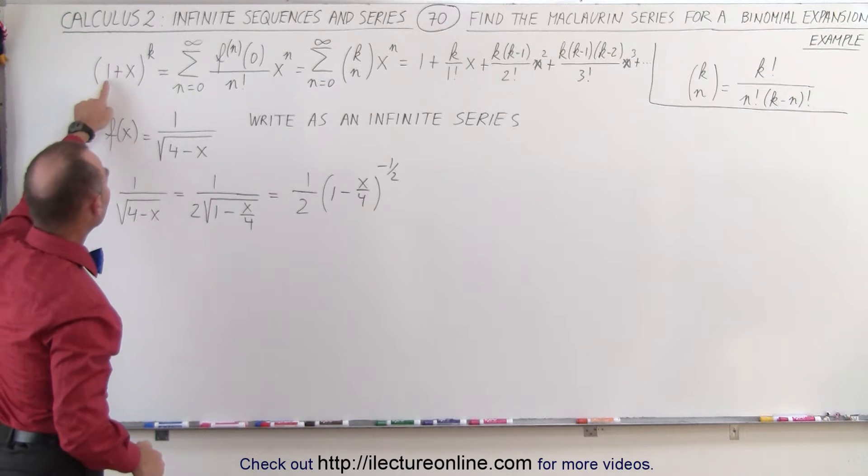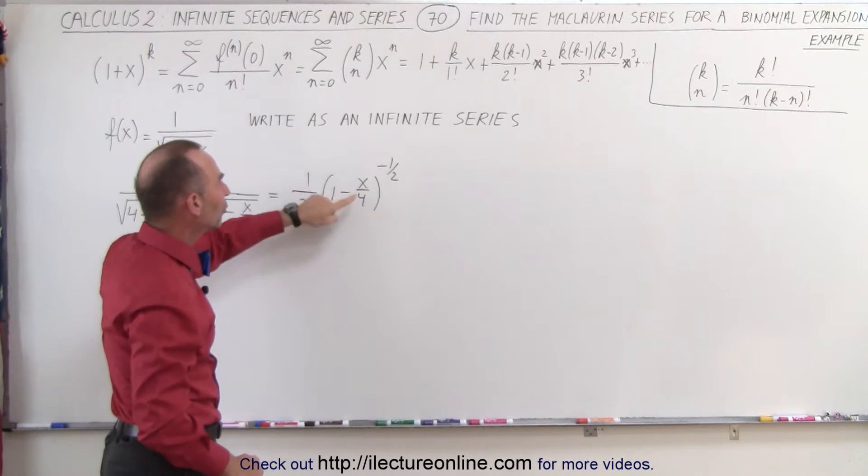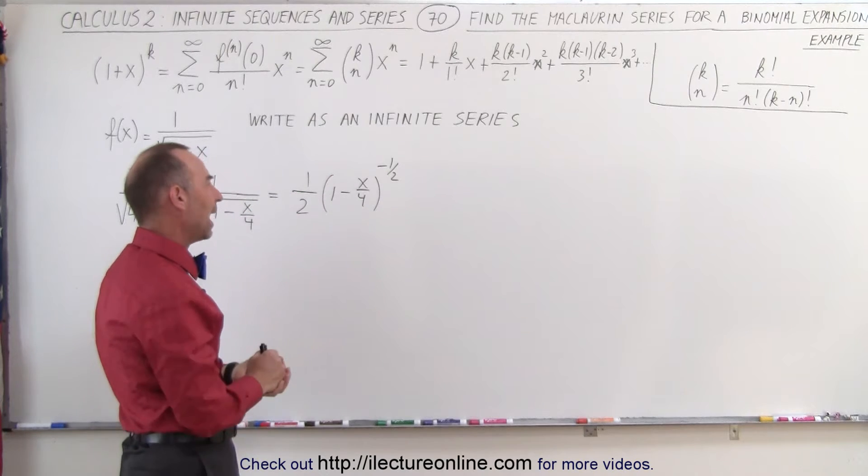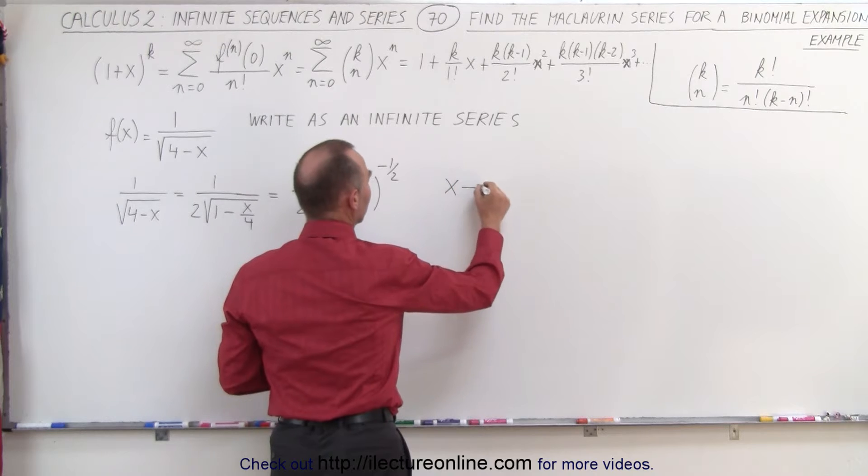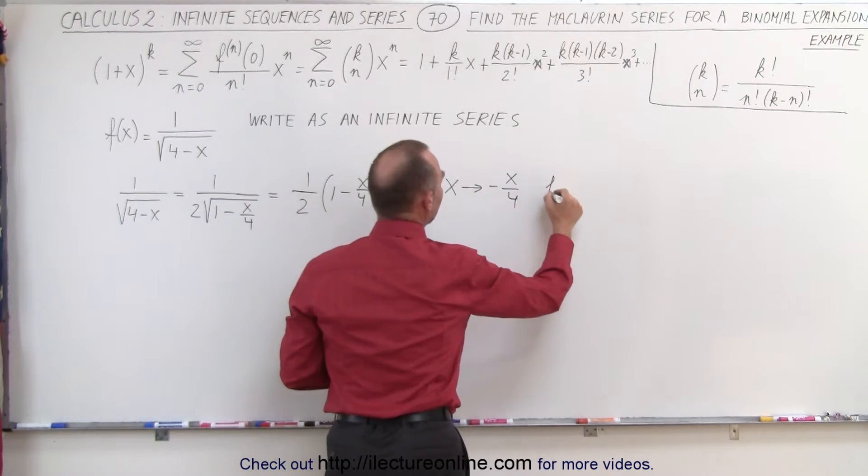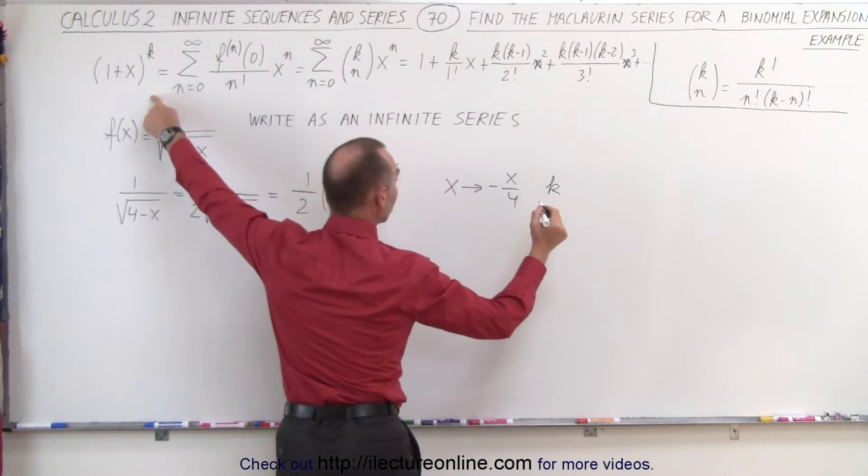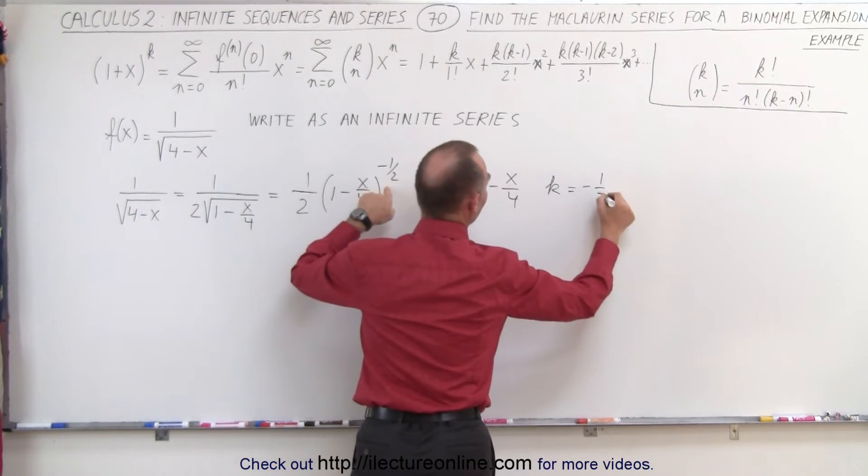Now take a look here we have 1 plus x to the k. Here we have 1 minus x over 4 to the minus 1 half. Well if we say that our x has to be transformed into minus x over 4 and our k in this binomial expansion format is equal to minus 1 half.